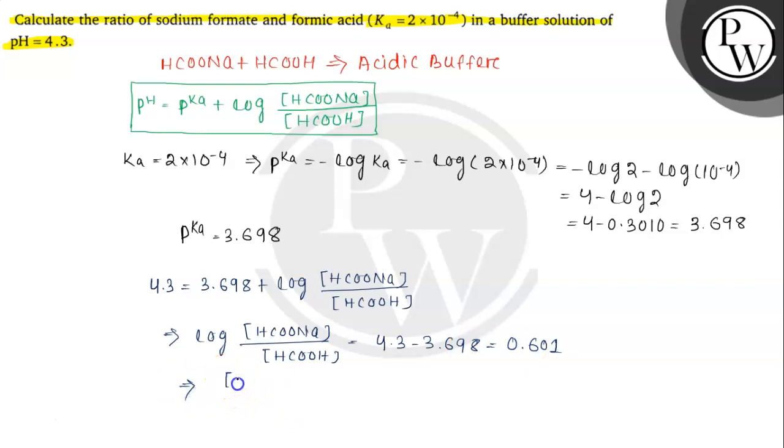So then the value of HCOONA divided by HCOOH will be 3.99, which is nearly equals to 4. So log value is 0.601, then you have to find out the antilog of 0.601, which equals to 3.99, and approximate value is 4.